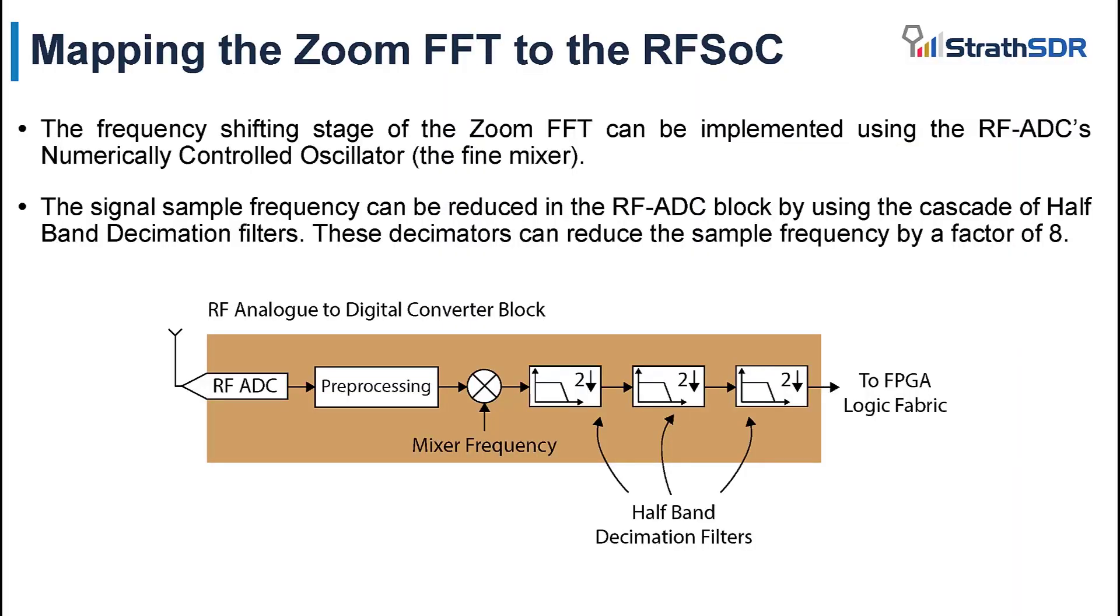The Zoom FFT can be effectively mapped to the RFSOC device. Consider an RFADC block which consists of a fine mixer and half-band decimation stages. The band of interest can be shifted to 0 Hz using the RFSOC's fine mixer. Then the signal can undergo several decimation stages to reduce its sample frequency by a factor of 8. The signal then interfaces to the FPGA logic fabric.